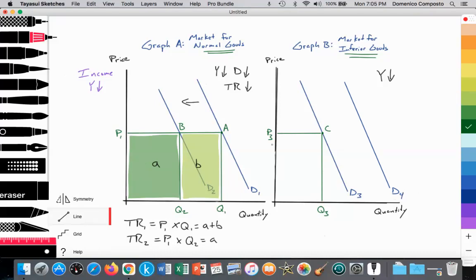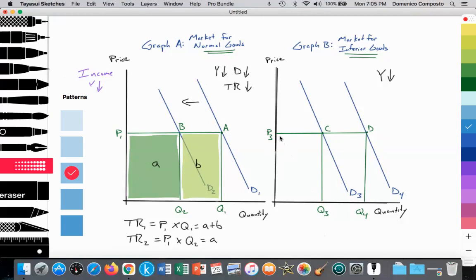Price is constant, P3. We see an increase in the quantity of consumption of those inferior goods from Q3 to Q4, from point C to point D along the new demand curve of D4. And again, let's highlight what's the impact on the total revenue.